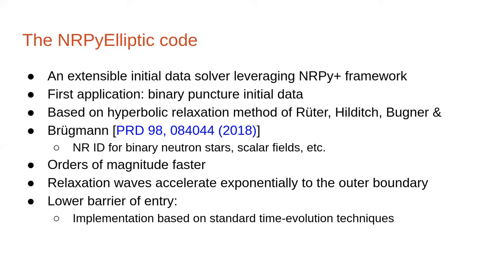I'm going to be talking about this new prescription that makes the solver orders of magnitude faster over the original flow route. That has to do with the fact that we will be having relaxation waves that accelerate exponentially to the outer boundary. Also, a very nice thing about NERPOLYPTIC — as with all NERPPLUS-based codes — it has a lower barrier of entry because it's easy to use and well documented in Jupyter notebooks. NERPOLYPTIC transforms an elliptic equation into a hyperbolic equation by introducing a pseudotime coordinate, so that you can use standard time evolution techniques for solving these boundary value problems.